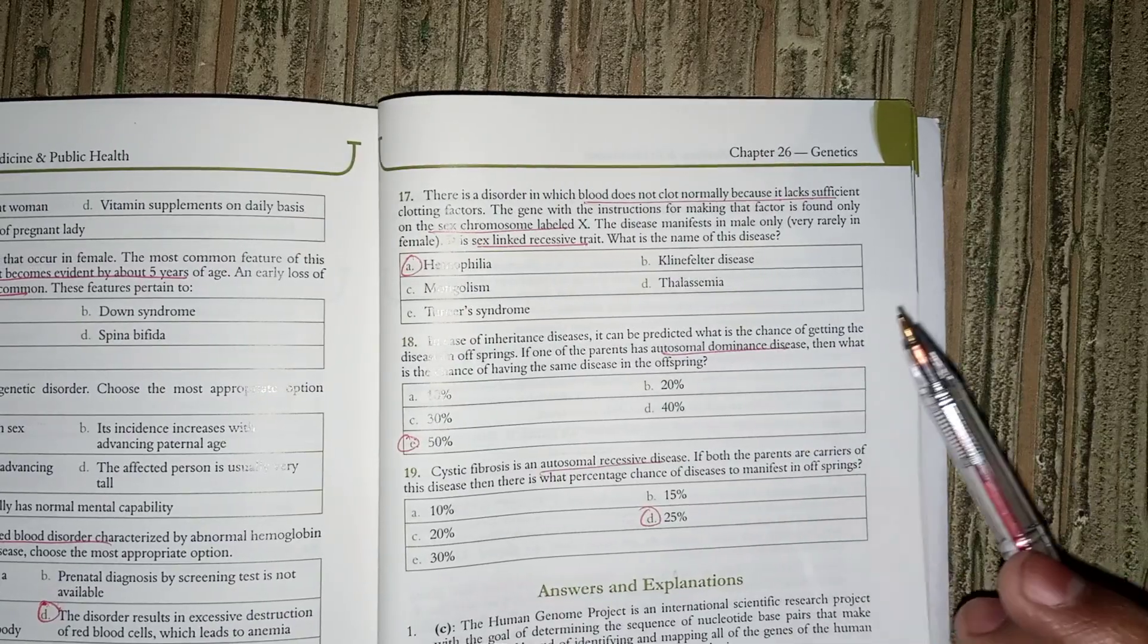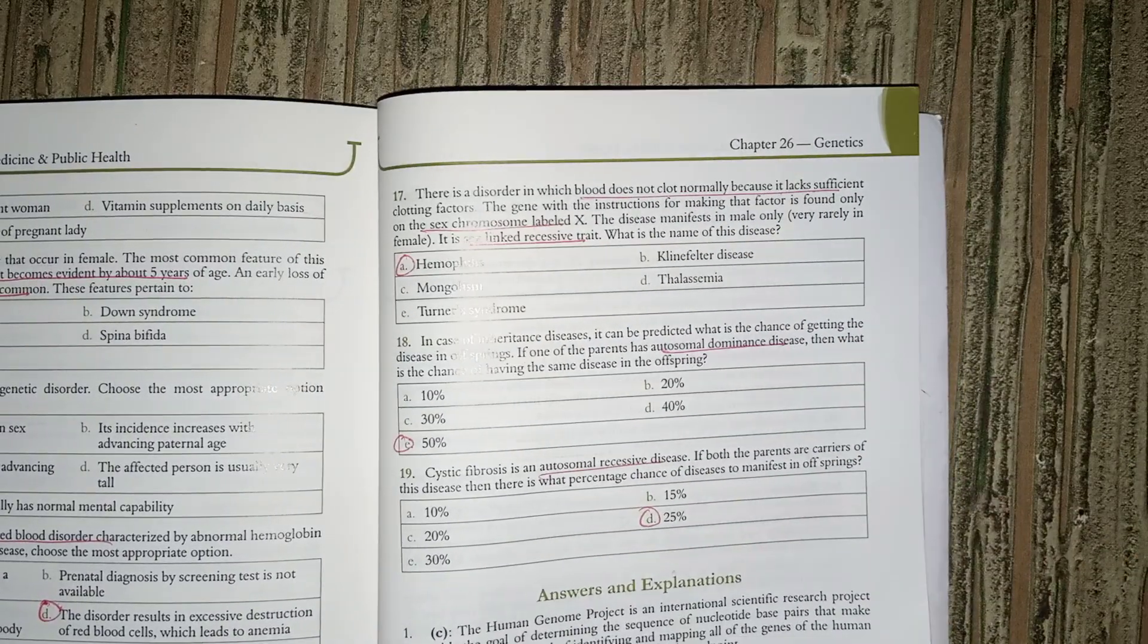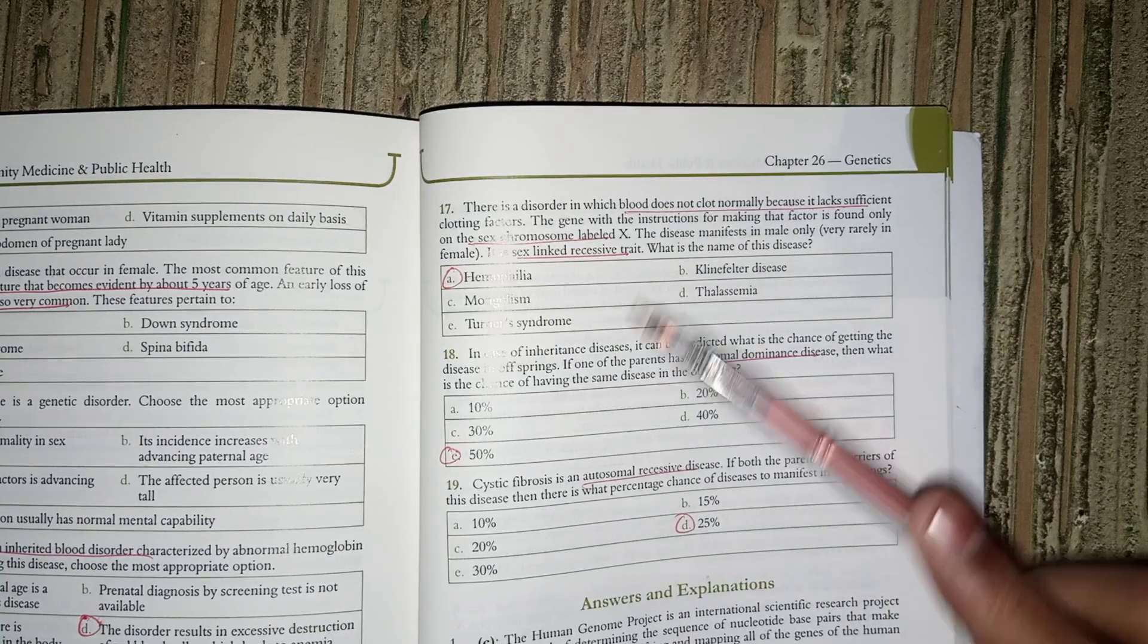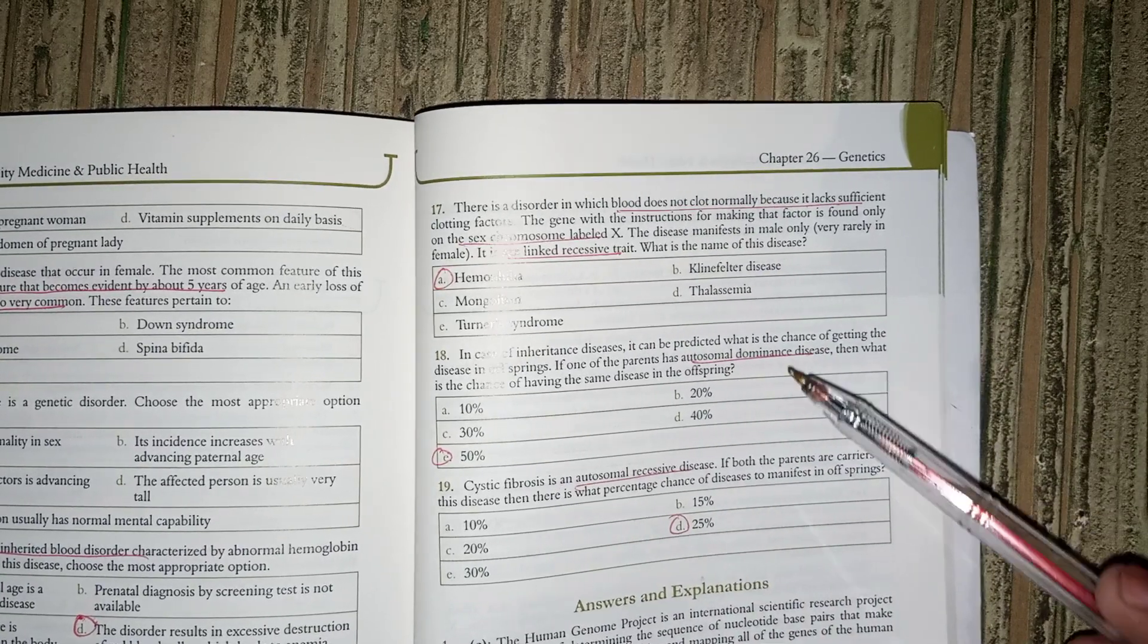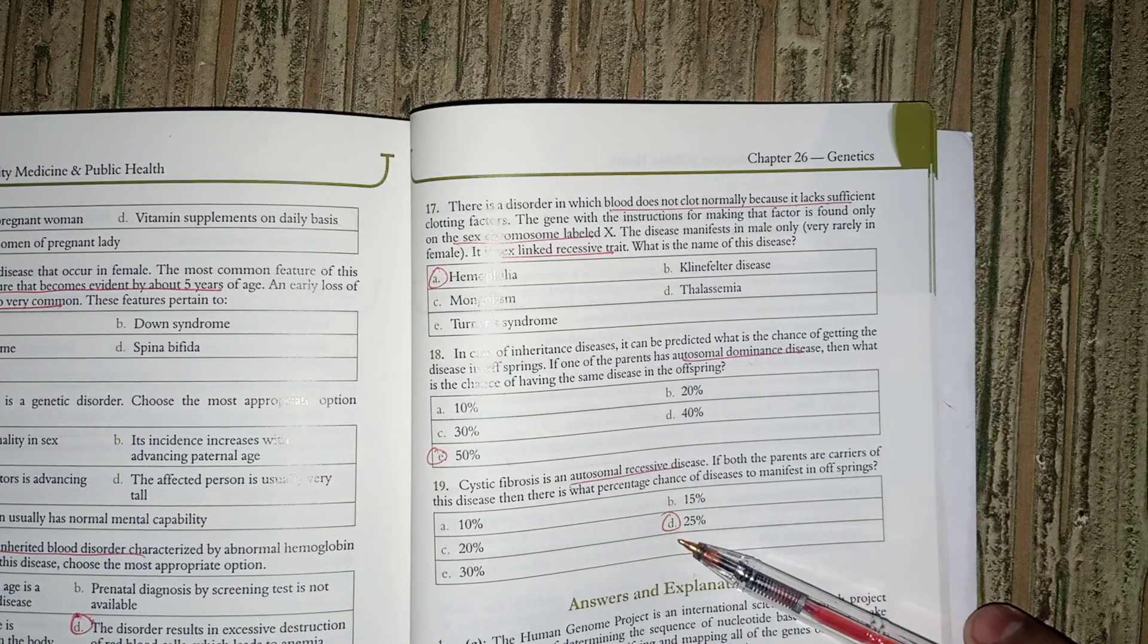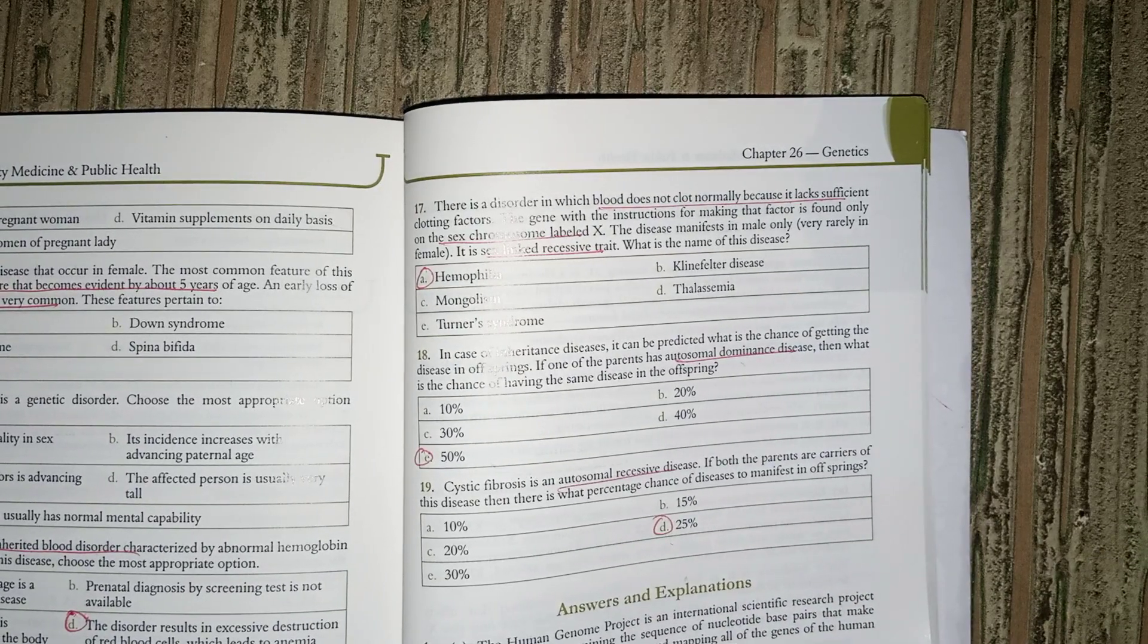Blood clotting disorders like hemophilia are X-linked recessive, meaning sex-linked recessive. If one parent has autosomal dominant disorder, offspring have 50% chance. Autosomal recessive has 25% chance. Thank you.